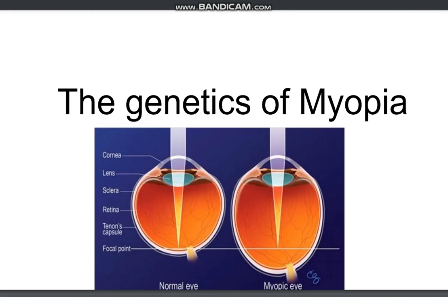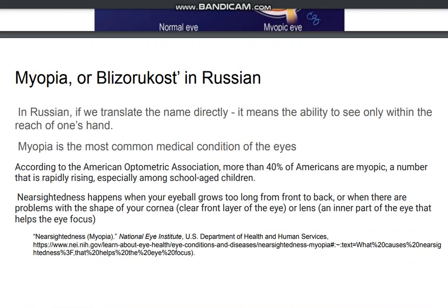The genetics of myopia. Myopia, or 'blizarukost' in Russian — which translates directly to 'the ability to see only within the reach of one's hand' — is the most common medical condition of the eyes. According to the American Optometric Association, more than 40% of Americans are myopic, a number that is rapidly rising, especially among school-aged children.